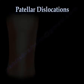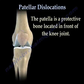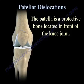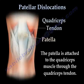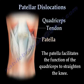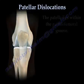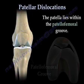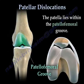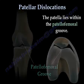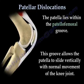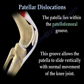Patellar Dislocations. The patella is a protective bone located in front of the knee joint. It is attached to the quadriceps muscle through the quadriceps tendon, and it facilitates the function of the quadriceps muscle to straighten the knee. It lies within the patellofemoral groove, which allows the patella to slide vertically with normal movement of the knee joint.